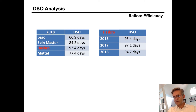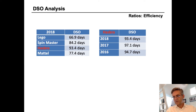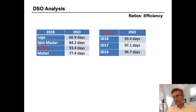So if Hasbro can get its collections under control, it would significantly improve cash flow. We should also keep in mind that an extraordinarily low DSO could be a problem on the other side, in that it might indicate the company is following a credit policy that's too tight and it's losing sales as a result.